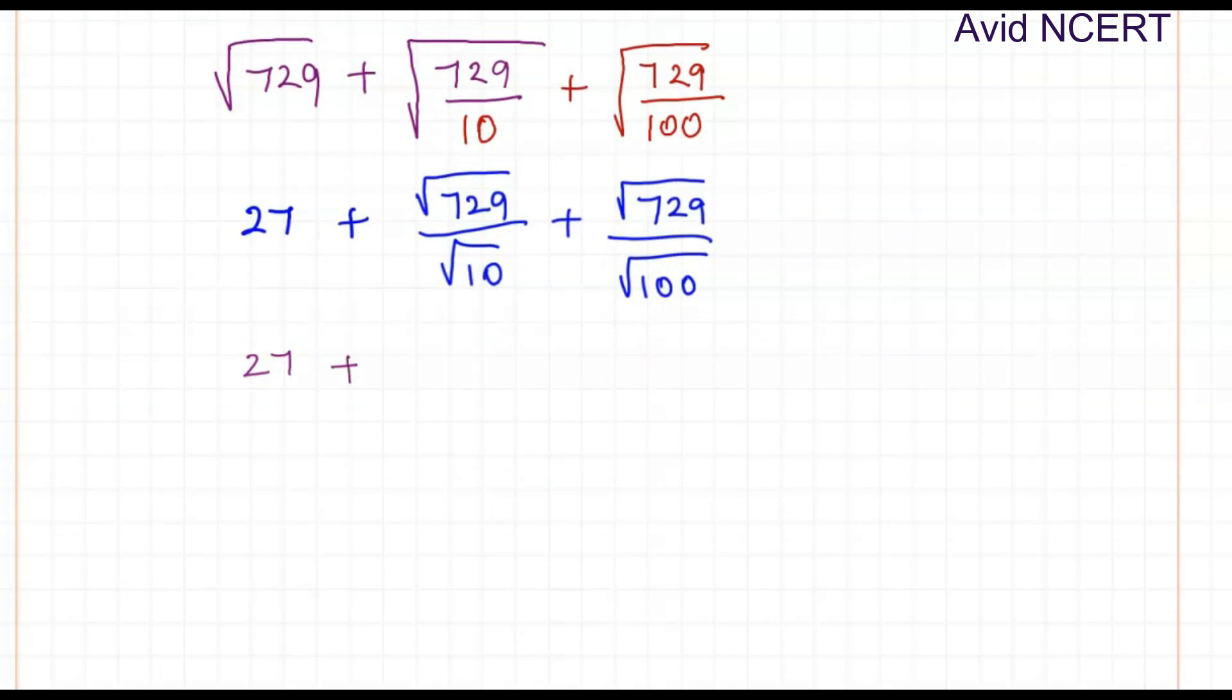So which is 27 plus now the square root of 729 again here is 27 divided by square root of 10. I will tell you how to find the square root of 10 plus same thing goes here. Square root of 729 is 27 divided by square root of 100 is 10.